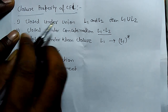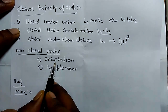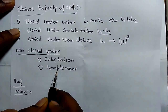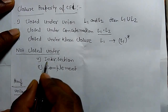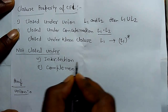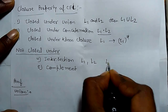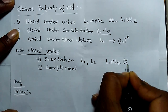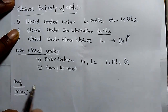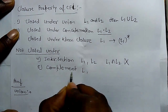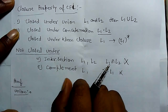Context free languages are not closed under intersection and complement. For intersection, it means if L1 and L2 are context free languages, then L1 intersection L2 cannot always be said to be a context free language — it may or may not be. Similarly, if L1 is a context free language, then sigma minus L1 cannot always be said to be a context free language.